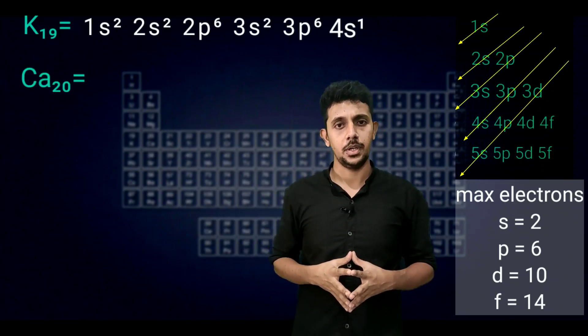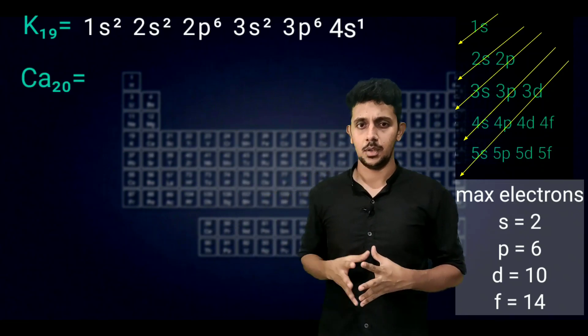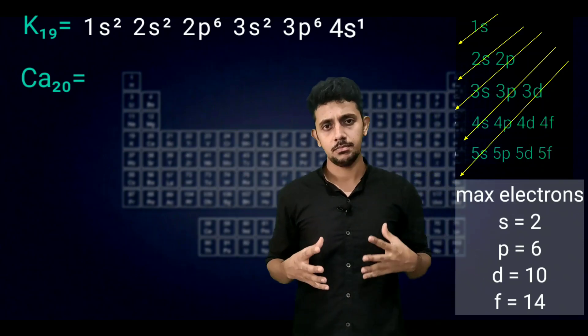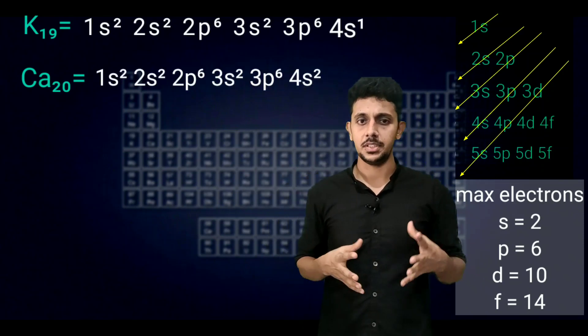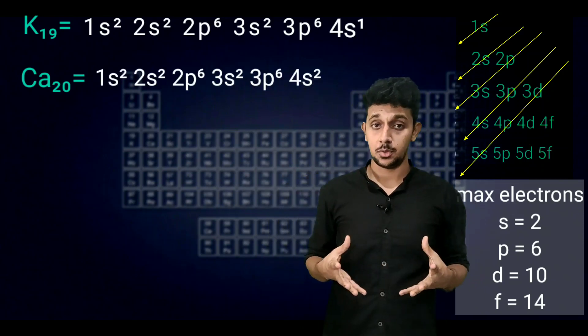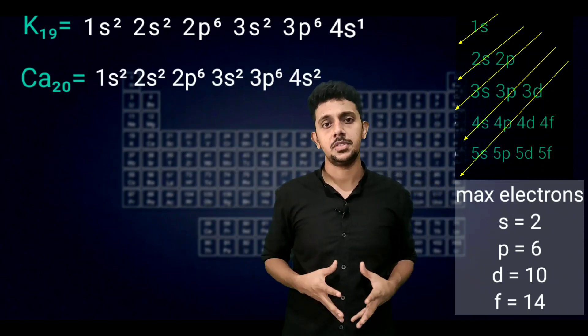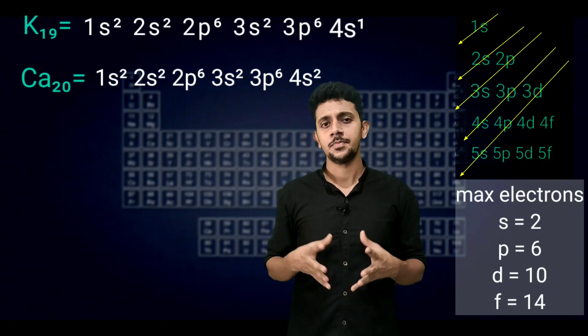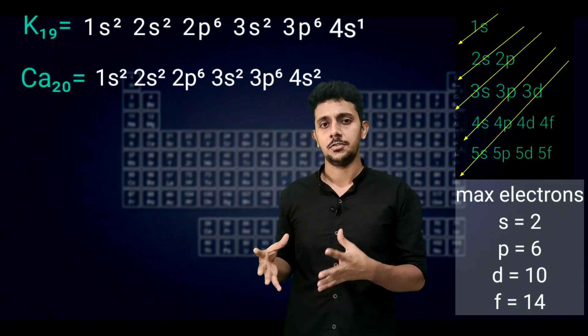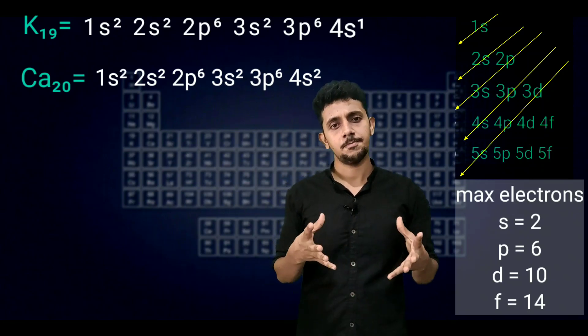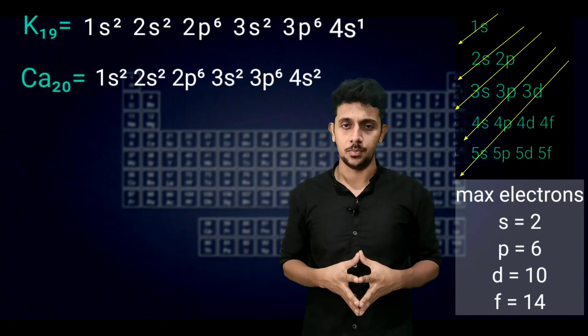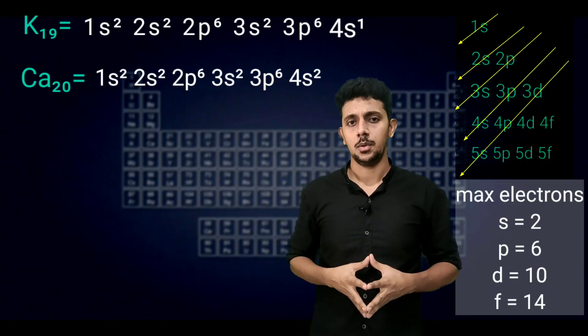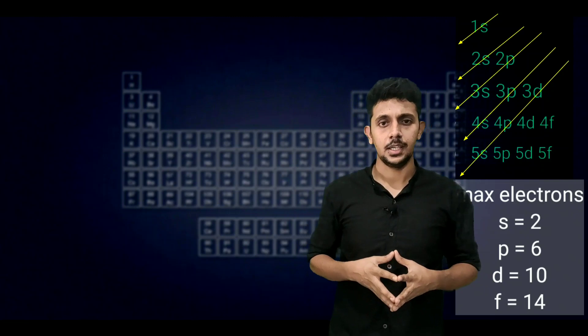Next example is calcium, atomic number 20. The configuration of calcium is 1s2, 2s2, 2p6, 3s2, 3p6, and 4s2.